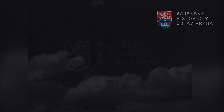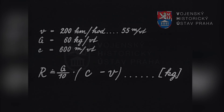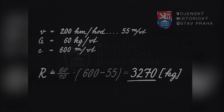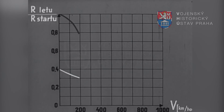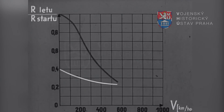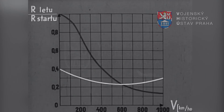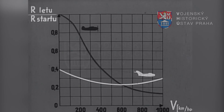Uvedeme si příklad. Pro rychlost letounu s turbokompresorovým motorem 200 km za hodinu, tedy 55 metrů za vteřinu, bude tah přibližně 3270 kg. U pístového motoru však zaznamenáme pokles tahu až na 1750 kg.